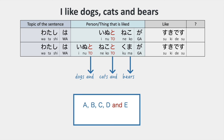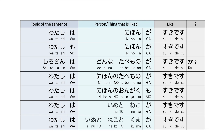If you want to say A, B, C, D, and E in Japanese, we say A to B to C to D to E. Today, we reviewed the particles we can use for the X ga suki desu pattern. Please leave a comment if you have any questions. Thank you.